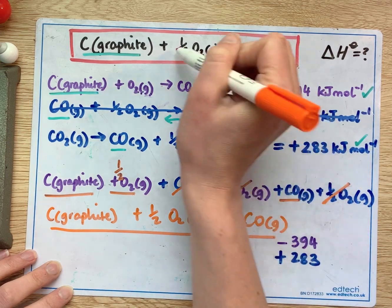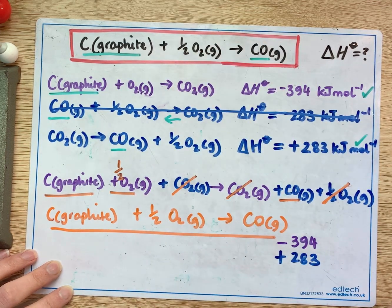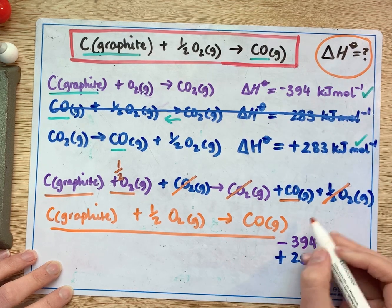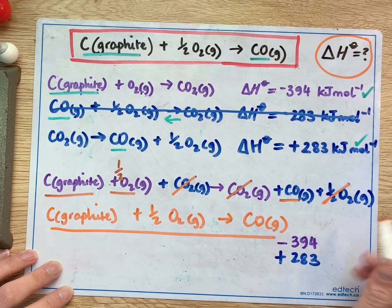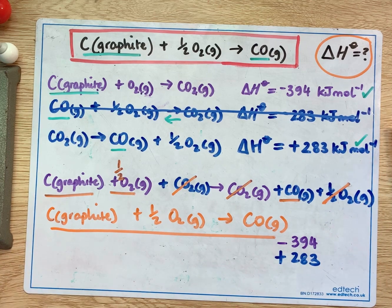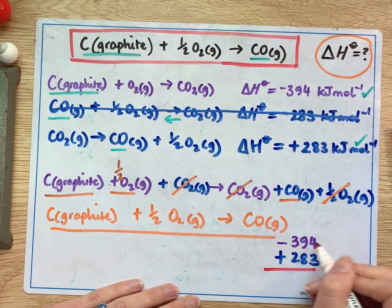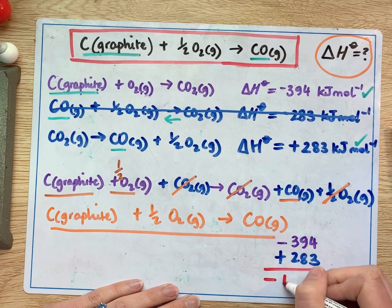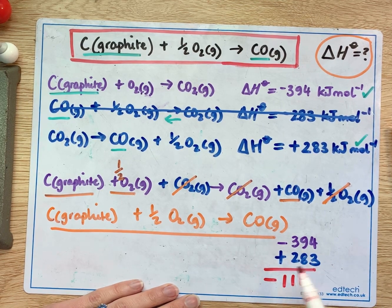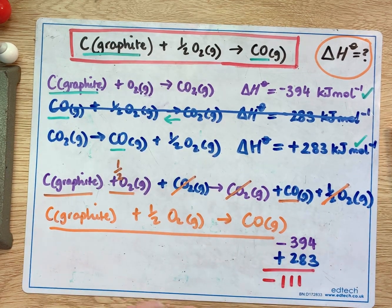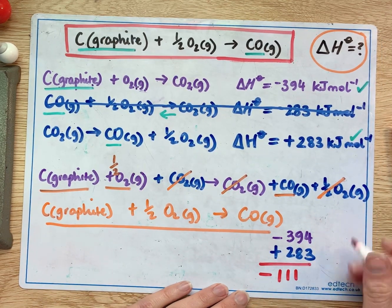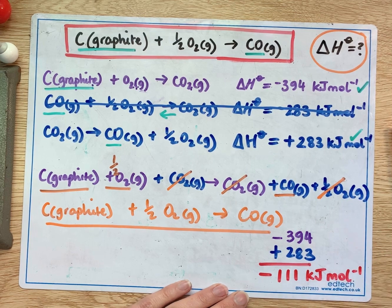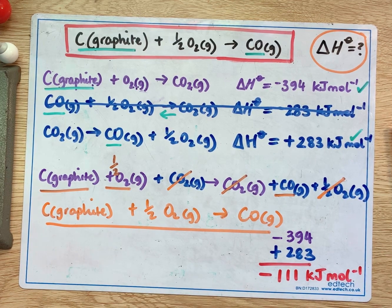And the enthalpy change here is going to be the two values added together so negative 394 and positive 283 together make minus 111 and we're talking about per mole of the carbon so we can put kilojoules per mole there as well and that's the question finished.